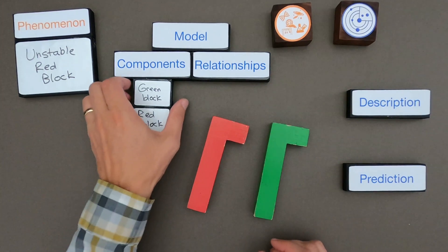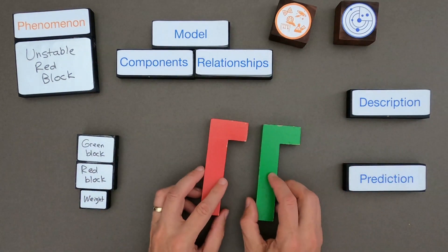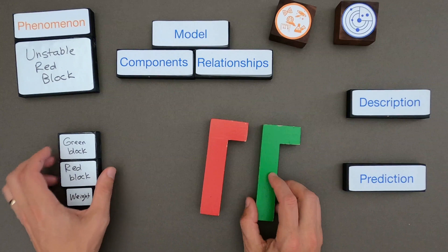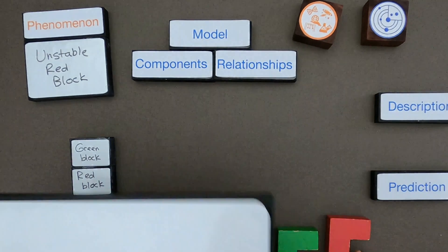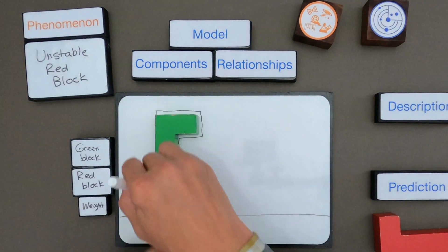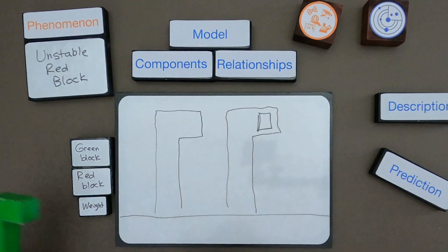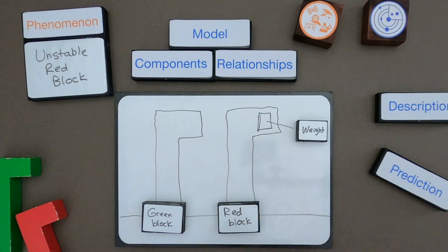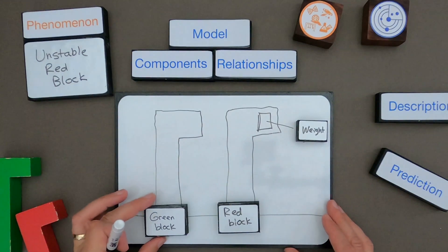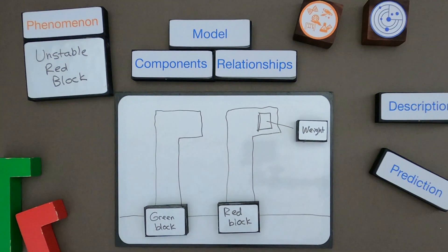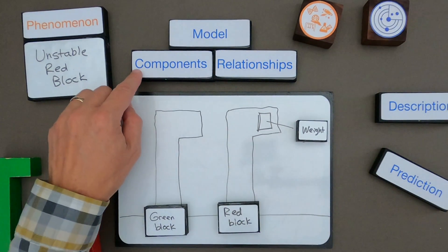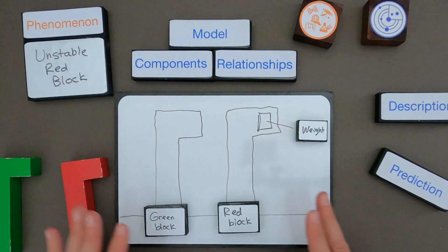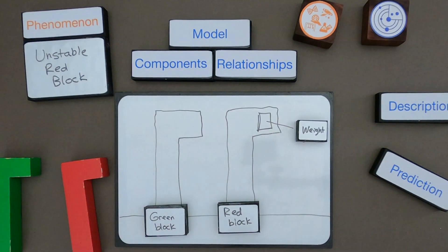It's hard for you to figure out exactly what I'm thinking without me representing the model in a more visual way. So what I'm going to do is sketch out my model — I'm going to draw both the green block and the red block. I've drawn my green block, my red block, and now you can see where I'm putting the weight. I think the weight is up here in the red block. Now I have all my components represented on my model but I don't show the relationships yet.